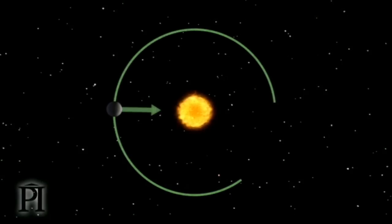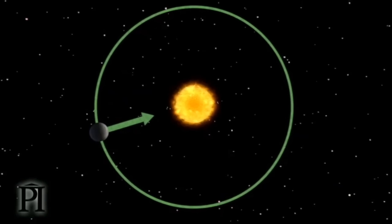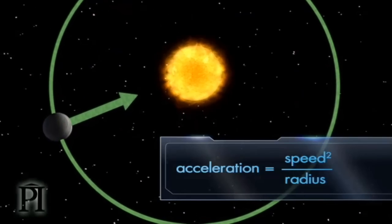Because Jupiter moves around the sun in uniform circular motion, we know that its acceleration is directed toward the sun and is equal to its speed squared divided by the radius.